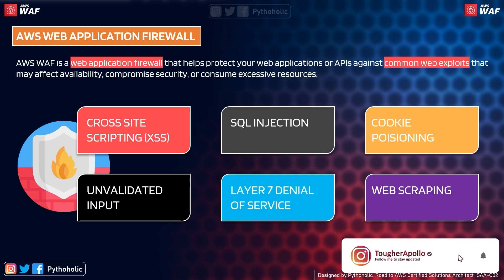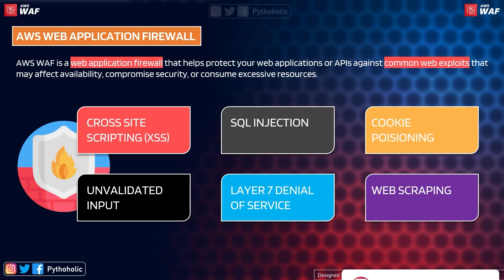The next one is cookie poisoning, which is quite simple. In cookie poisoning, you as an attacker modify a cookie to gain unauthorized access or unauthorized information about the user, for purposes such as identity theft.